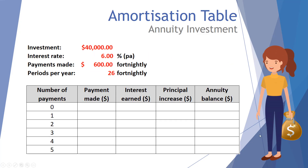Here's our table structure: the first column is the number of payments, the second is payments made, the third is interest earned, the fourth is principal increased, and the fifth is annuity balance. This differs from a reducing balance loan — here interest is being earned and principal is increasing, so our annuity balance will grow. The starting investment is $40,000 at a 6% per annum rate compounded fortnightly, with fortnightly payments as well.